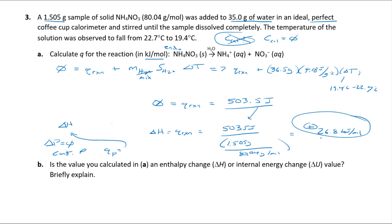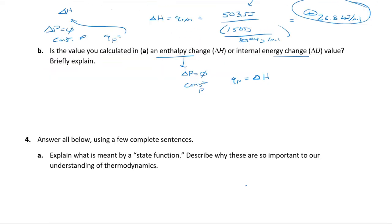This is a ΔH (enthalpy change), not a ΔU (internal energy change), because the conditions are constant pressure. When heat is measured at constant pressure, q = ΔH. When heat is measured at constant volume, q = ΔU. Go back to your notes for the full derivation from the definitions of enthalpy versus internal energy.